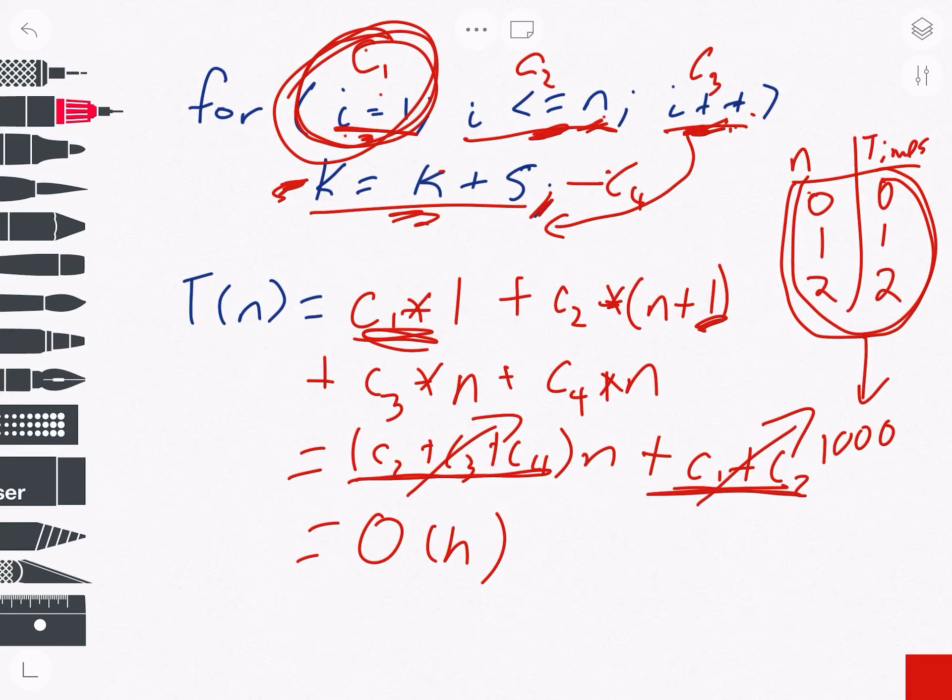Right, so n becomes the thing that dominates how long this algorithm is going to take. I hope this has cleared up some things. I hope this is helpful to you to understand why we use this whole Big O notation and why it's important. Okay, thank you for listening and have a good weekend.